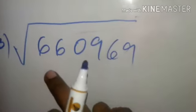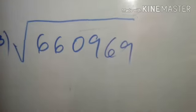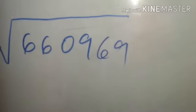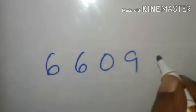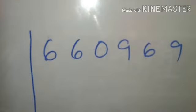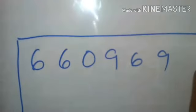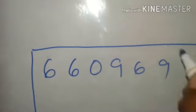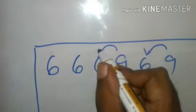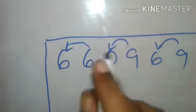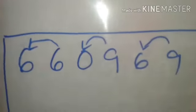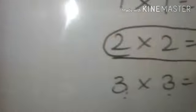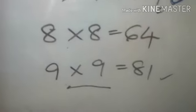The last one 660969. Okay. The first step is marking the pairs. And we have done with the first step. Find out which two numbers can be multiplied, same numbers, to get 66 or less than 66.